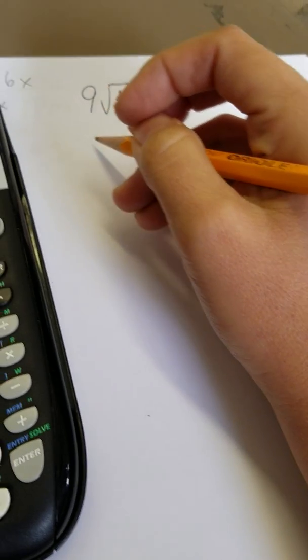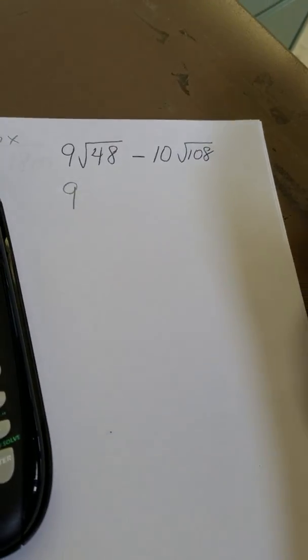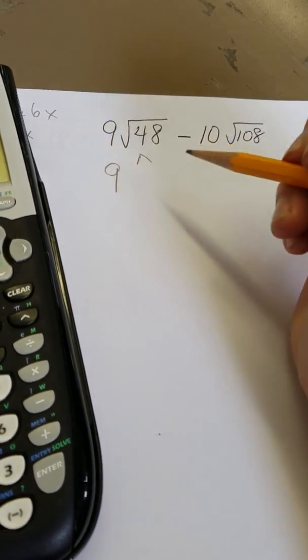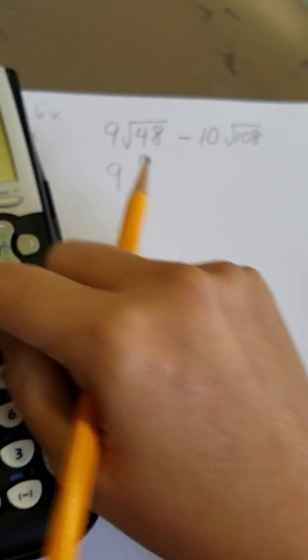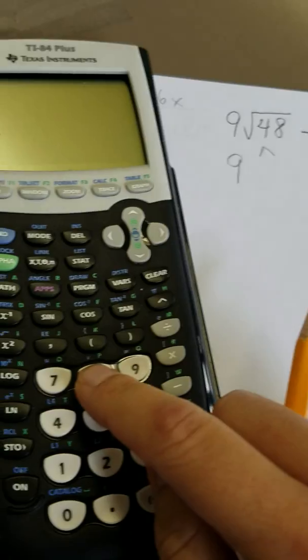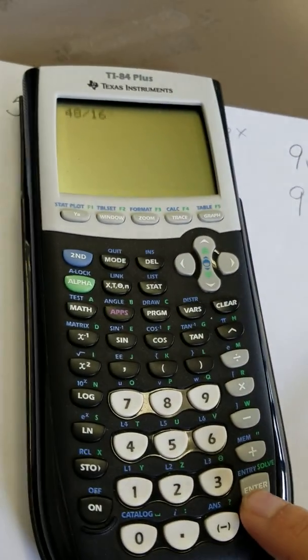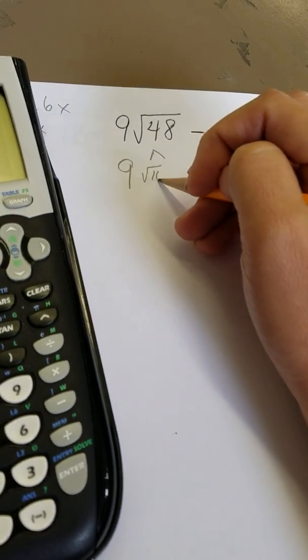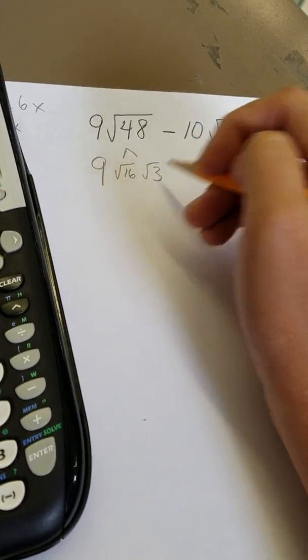Okay, 9 is the coefficient. He's just the next-door neighbor friend. Now let's break down 48. I'm pretty sure that 16 goes into 48. Let's try it out. It does. So 16 times 3 is 48.